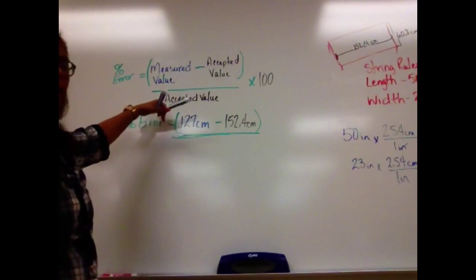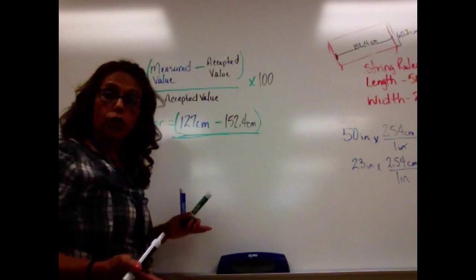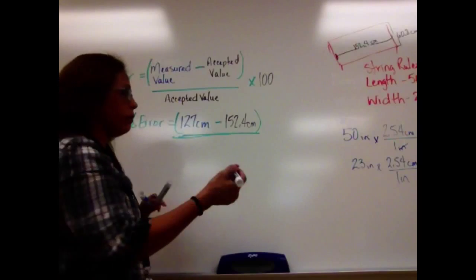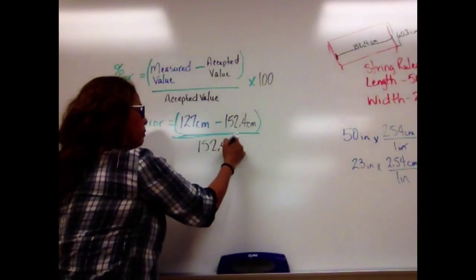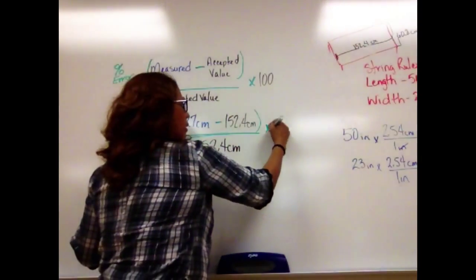Now at the bottom we have our accepted value. Well, our accepted value would be this one, which is measured with the correct measuring device. So 152.4 centimeters. And at the end, all of this will be multiplied by 100.